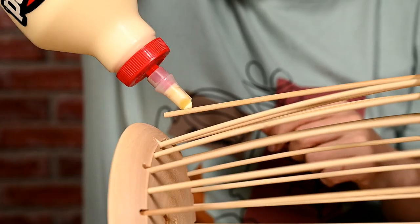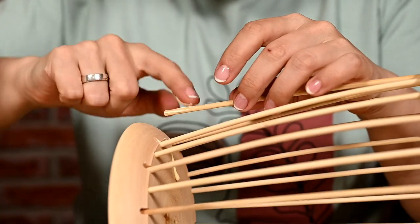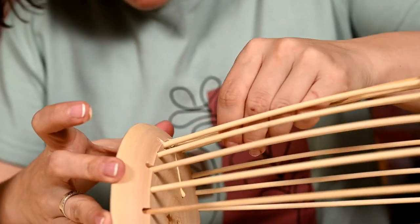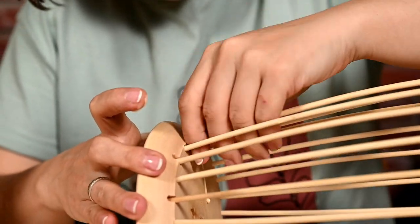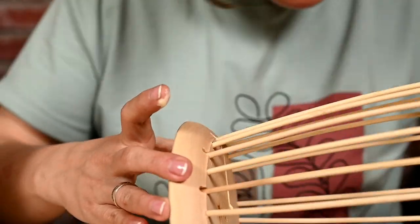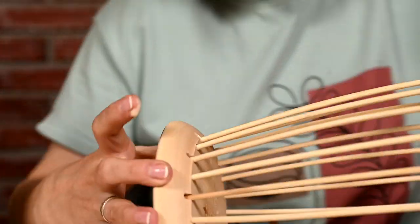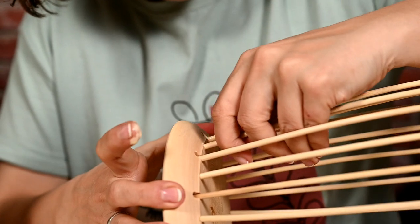To make the skewers hold well in the plate, I'm gluing each stick into it using wood glue. You can also fix the tips of the skewers on the bottom with hot glue or epoxy glue to make it hold well.